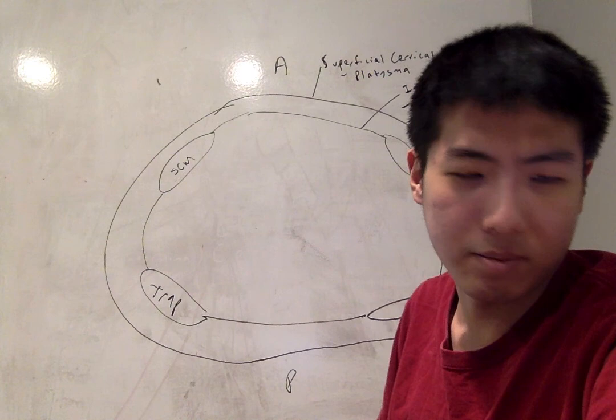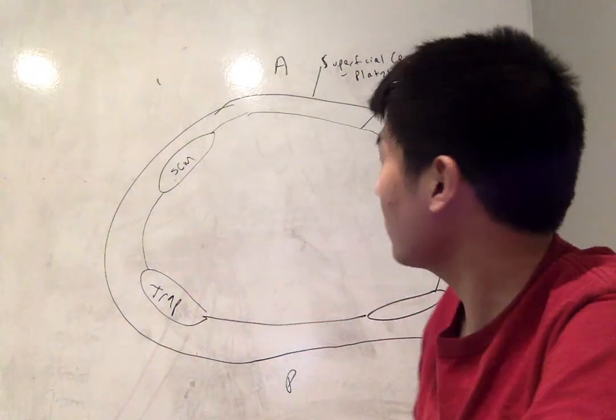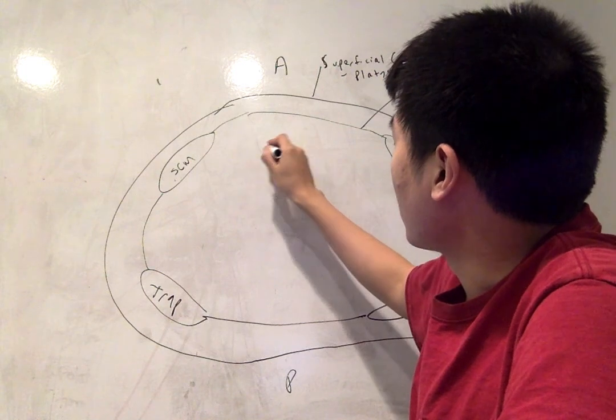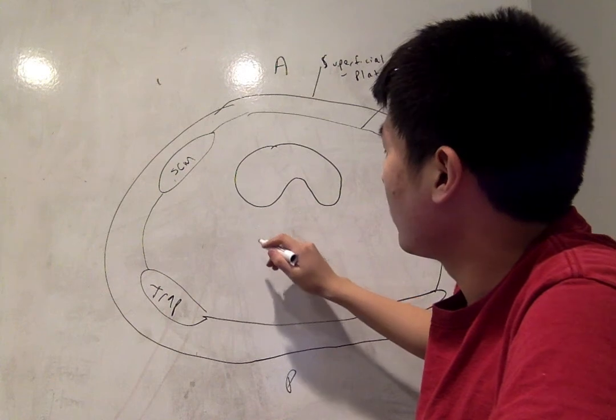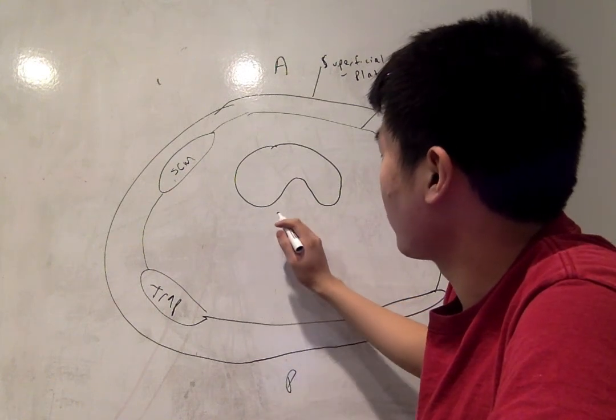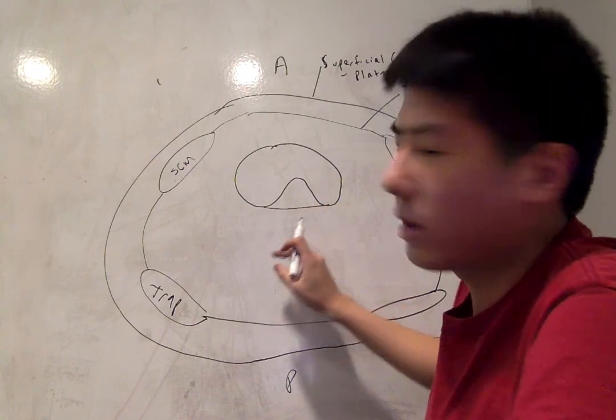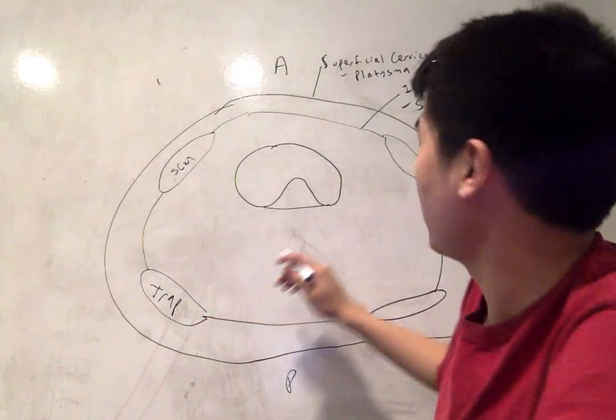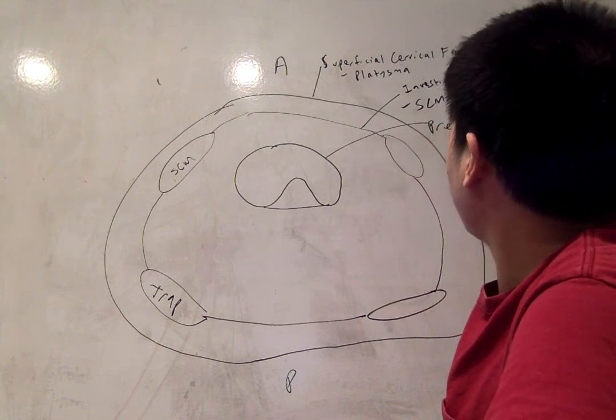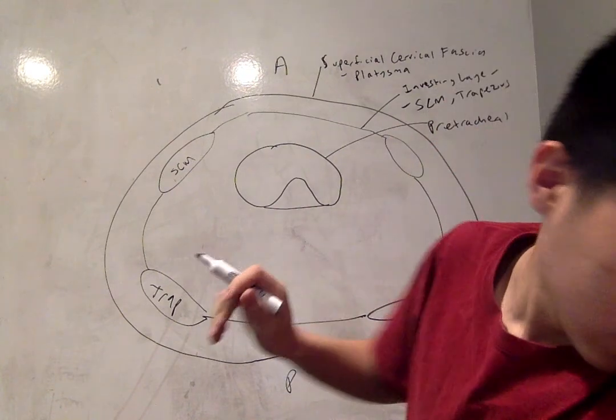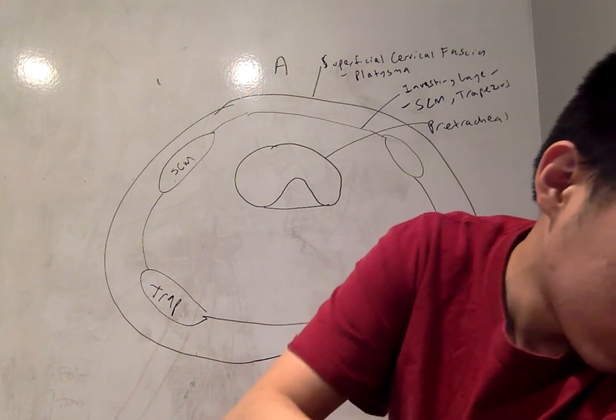And next we have the pre-tracheal layer. So that's going to be this c-shaped structure here.